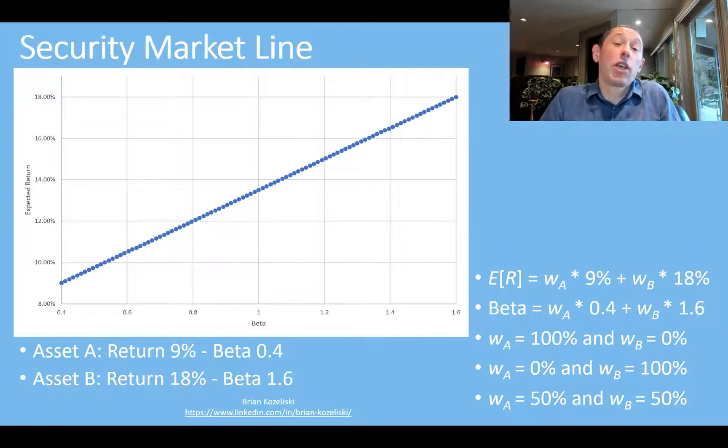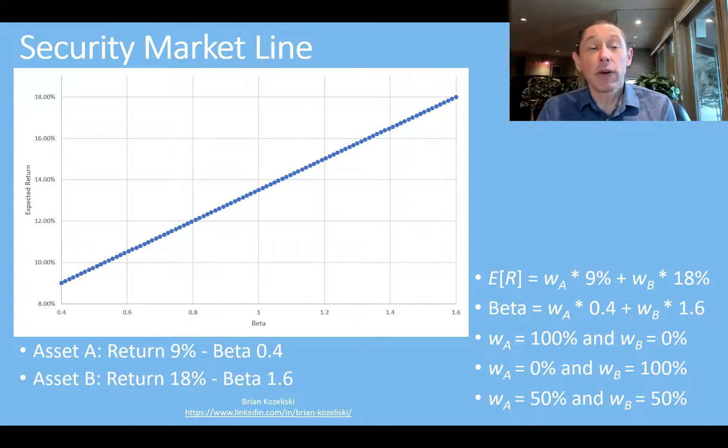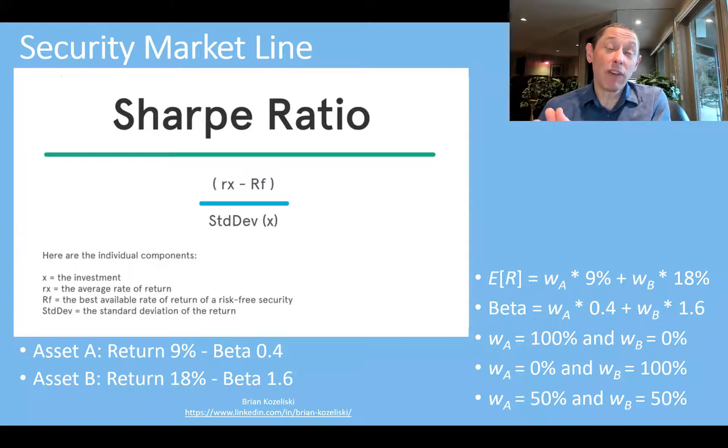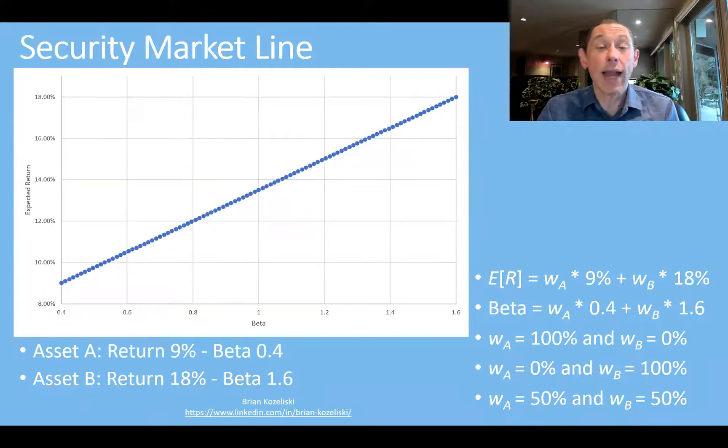So it is a line. This is a security market line. We did it before looking at one asset and the risk-free rate, but the concept here is very similar. Now, one thing I mentioned in the previous videos is this security market line doesn't tell you that all of these assets are efficient from a sharp ratio standpoint.